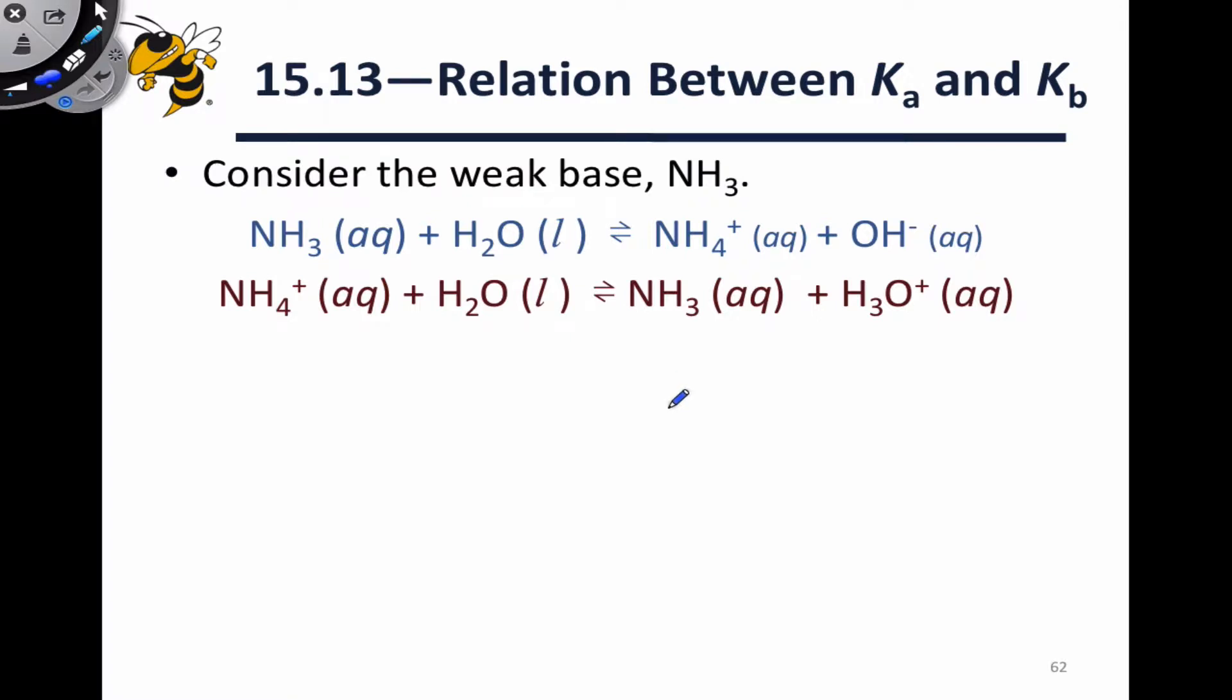In this video, we're going to derive an extremely important relationship between Ka for an acid and Kb for the conjugate base of that acid. This relationship is important not just because it's quantitative, and it is, it allows us to go between Ka and Kb for a conjugate pair, but also because it has very important qualitative implications about acid and base strength. If we know in a qualitative sense whether an acid is strong, for example, we can predict whether the conjugate base will be strong or weak.